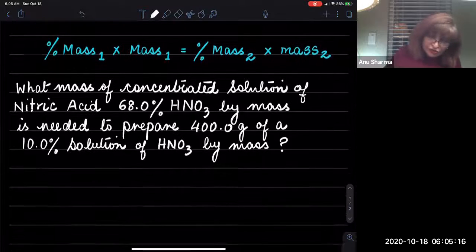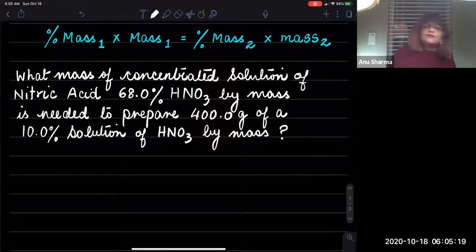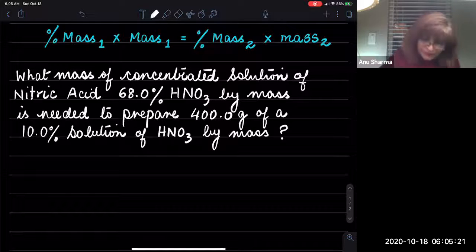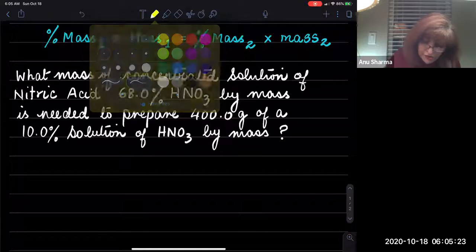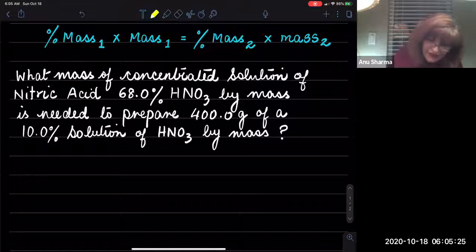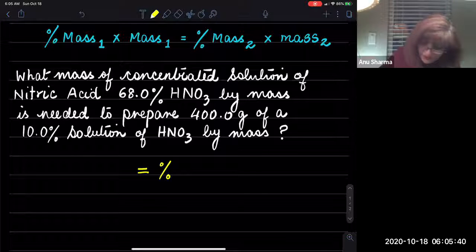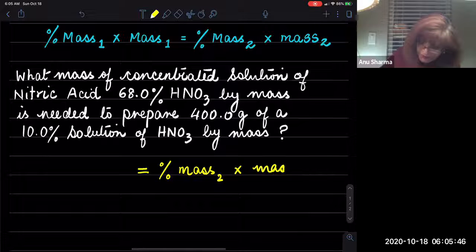We are just going to substitute the values in the formula percentage mass times the mass of entity one. So we are given the nitric acid which is 68% by mass, and we are supposed to prepare 400 grams of the 10% solution. So that's the mass percent two times the given mass of two.